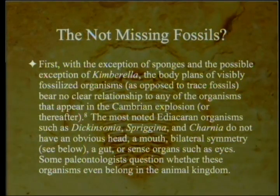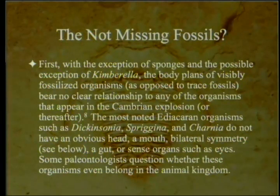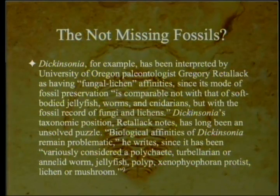Re-evaluating these forms: with the exception of sponges and possibly Kimberella, the body plans of visibly fossilized Ediacaran organisms bear no clear relationship to any organisms that appear in the Cambrian explosion or thereafter. The most noted forms — Dickinsonia, Sprangina, and Charnia — do not have an obvious head, a mouth, bilateral symmetry, a gut, or sense organs such as eyes. Some paleontologists question whether these organisms even belong in the animal kingdom. Dickinsonia has been interpreted by University of Oregon paleontologist Gregory Retallick as having fungal or lichen affinities, since its mode of fossil preservation is comparable not with soft-bodied jellyfish or cnidarians, but with the fossil record of fungi and lichens.